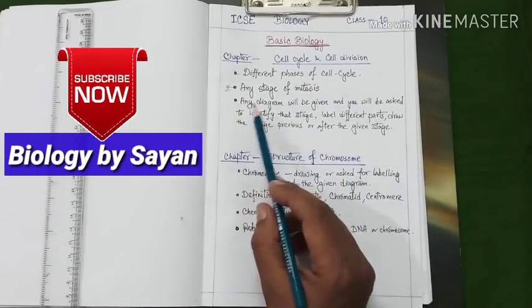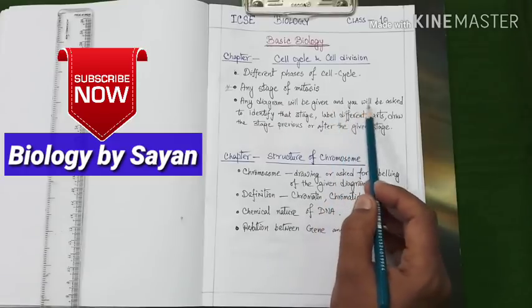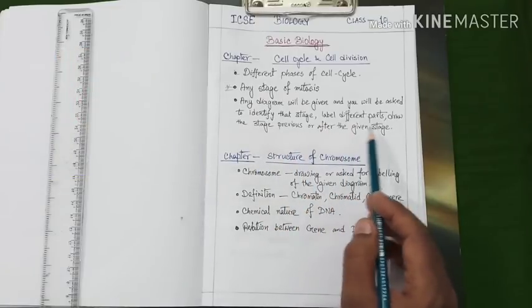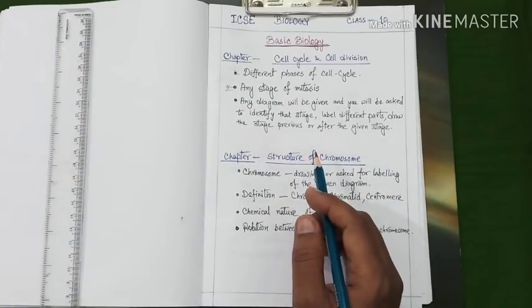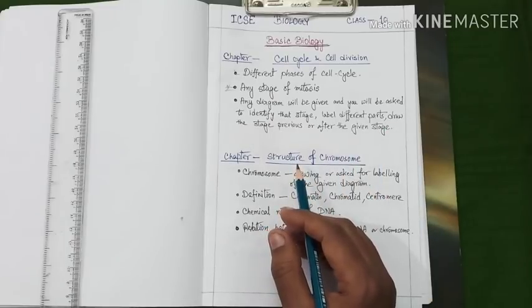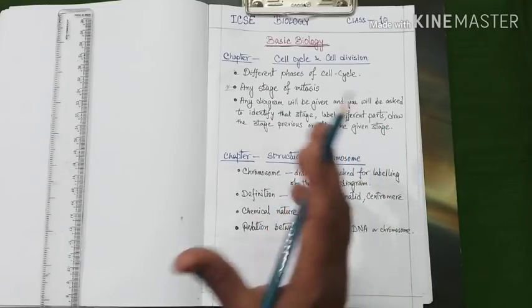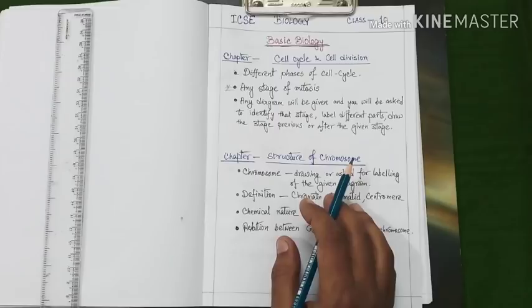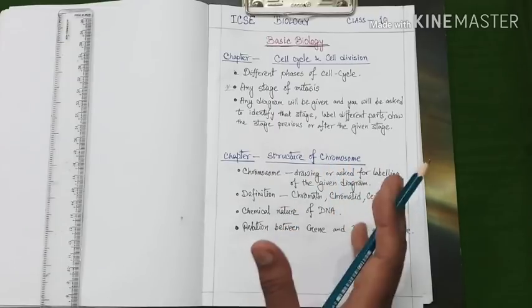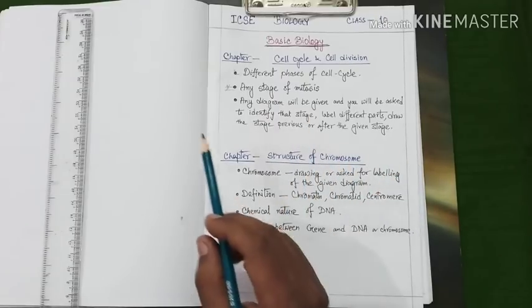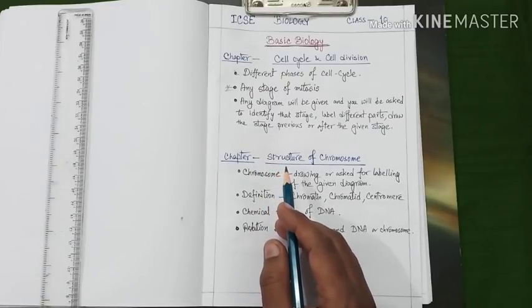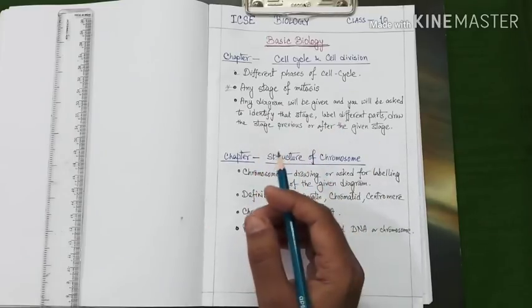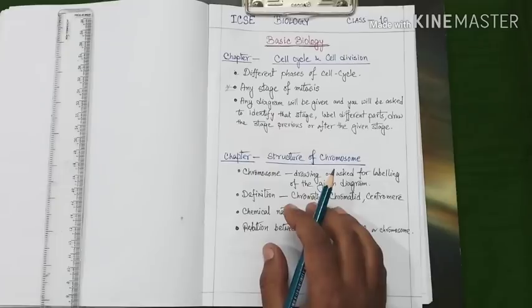Next topic is any diagram will be given and it will be asked to identify that stage, label different parts, and draw the stage previous or after the given stage. Suppose you have been provided with the stage of metaphase of cell division. You have to identify the stage whether it is metaphase, anaphase, prophase, whatever the stage is. Then you may be asked to point out different portions and identify the previous stage or the next stage of that given diagram. And you may be also asked to mention the characteristics along with the diagram of those stages.